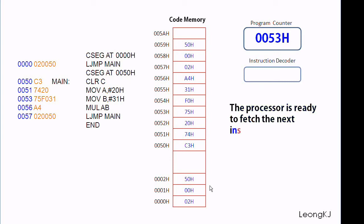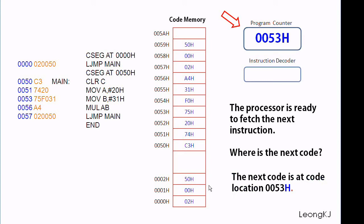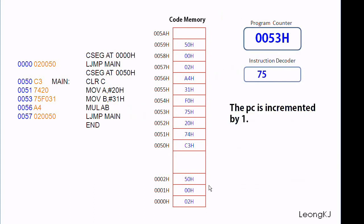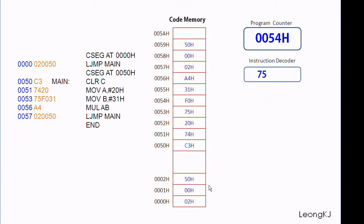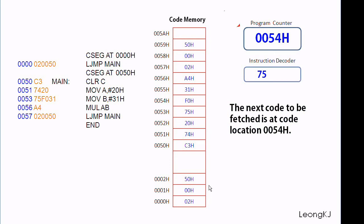The processor is ready to fetch the next instruction. The next code is at location 0053. The PC is incremented by 1. This instruction is not complete — the processor needs to fetch more code. The next code to be fetched is at code location 0054.